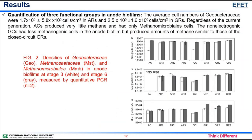Quantification of three functional groups in anode biofilms: The average cell numbers of Geobacteraceae were 1.7 × 10⁶ ± 5.8 × 10⁵ cells/cm² in acetate-fed reactors and 2.5 × 10⁶ ± 1.6 × 10⁶ cells/cm² in glucose-fed reactors. Regardless of current generation, acetate-fed control reactors produced very little methane and had only Methanomicrobiales cells. The non-electrogenic glucose-fed control reactors had fewer methanogenic cells in the anode biofilm but produced amounts of methane similar to those of the closed-circuit glucose-fed reactors.